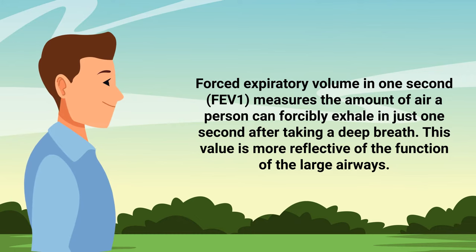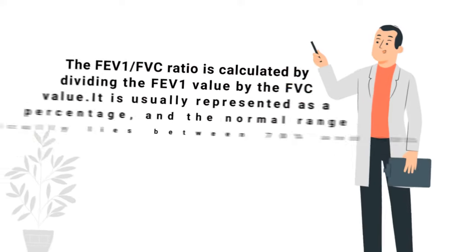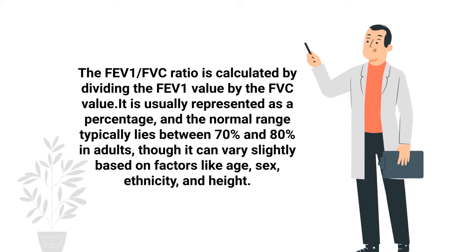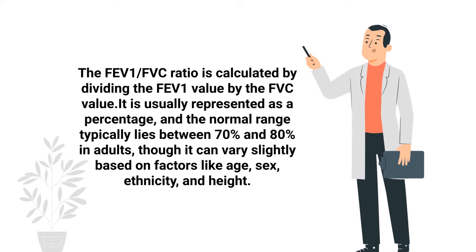On the other hand, forced expiratory volume in one second, or FEV1, measures the amount of air a person can forcefully exhale in just one second after taking a deep breath. This value is more reflective of the function of the large airways. The FEV1 to FVC ratio is calculated by dividing the FEV1 value by the FVC value, and is usually represented as a percentage.